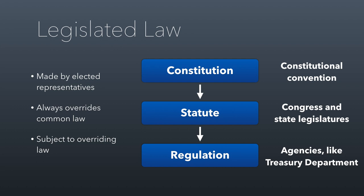Legislative law is also always subject to overriding law — the Constitution versus statute versus regulation. The Constitution was created by a constitutional convention, both at the federal and state level, and it can be changed by constitutional convention or by two-thirds of Congress and three-quarters of the states approving a change, which has happened multiple times. Legislatures are empowered by constitutional rights to write statutes, but legislatures and Congress can also delegate that law-writing power to agencies. For example, in the federal tax code, you have volumes of Treasury regulations that further interpret the tax code, written by the Treasury Department.